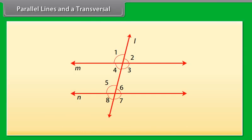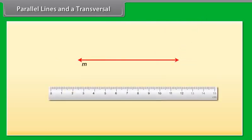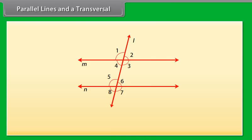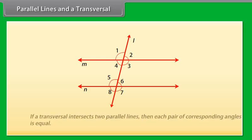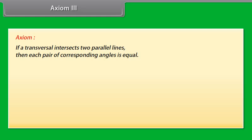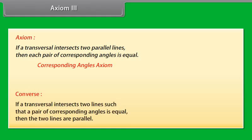Now let us find out the relation between the angles in these pairs when line M is parallel to line L. With ruler and pencil, draw two parallel lines and a transversal to intersect them. If we measure any pair of corresponding angles, we find that angle 1 equals angle 5, angle 2 equals angle 6, angle 4 equals angle 8, and angle 3 equals angle 7. For this we get one more axiom: if a transversal intersects two parallel lines, then each pair of corresponding angles is equal. This is called the corresponding angles axiom.